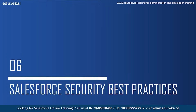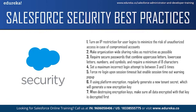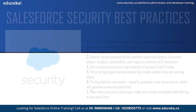Salesforce security best practices: First, turn on IP restriction for user logins to minimize unauthorized access risk. Second, make organization-wide sharing as restrictive as possible while allowing normal business functions, using role hierarchy, sharing rules, and permission sets to extend access. Third, require secure passwords combining uppercase, lowercase, numbers, and symbols with a minimum of eight characters. Fourth, set maximum incorrect login attempts to between three and five. Fifth, ensure users re-login upon session timeout and enable session timeout warning popups. Sixth, if using platform encryption, regularly generate a new tenant secret to produce a new encryption key, and ensure all data encrypted with a key is decrypted before destroying that key.